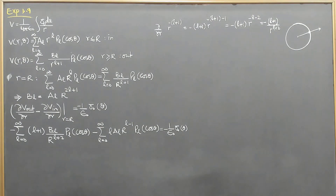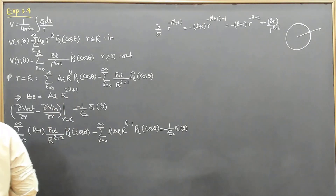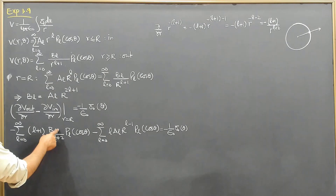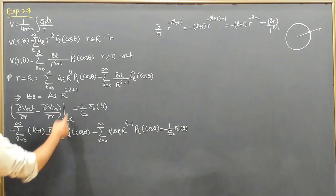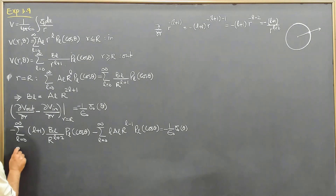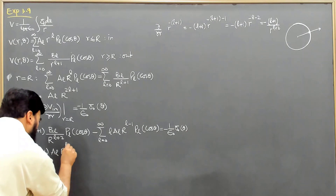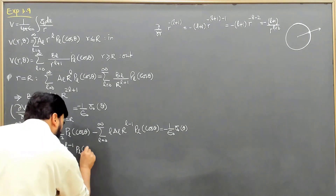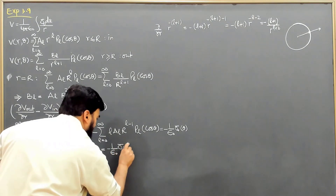We can now use the expression B_l = A_l * R^(2l+1) found earlier. Substituting and simplifying, the R powers combine so that the result becomes: summation on l from 0 to infinity of (2l+1) * A_l * R^(l-1) * P_l(cos theta) equals minus (1/epsilon_0) * sigma_0(theta).